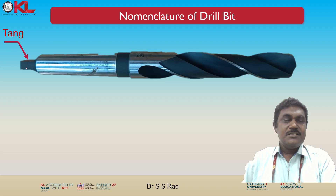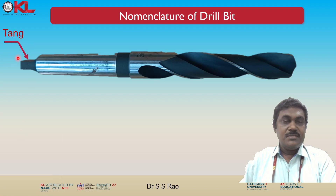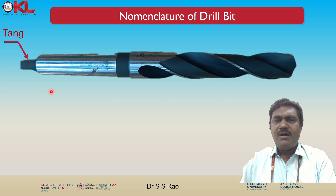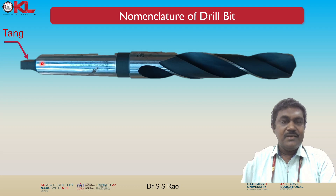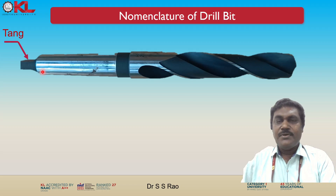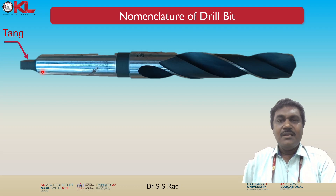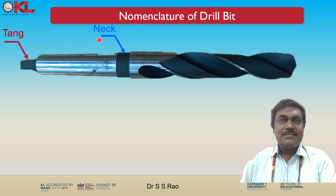This portion is called the tang. The tang of a drill bit is a small cylindrical extension located at the end of the shank. It serves as a means to secure the drill bit into the drill shank, allowing for a stable connection during drilling operations. That is the main function of the tang.